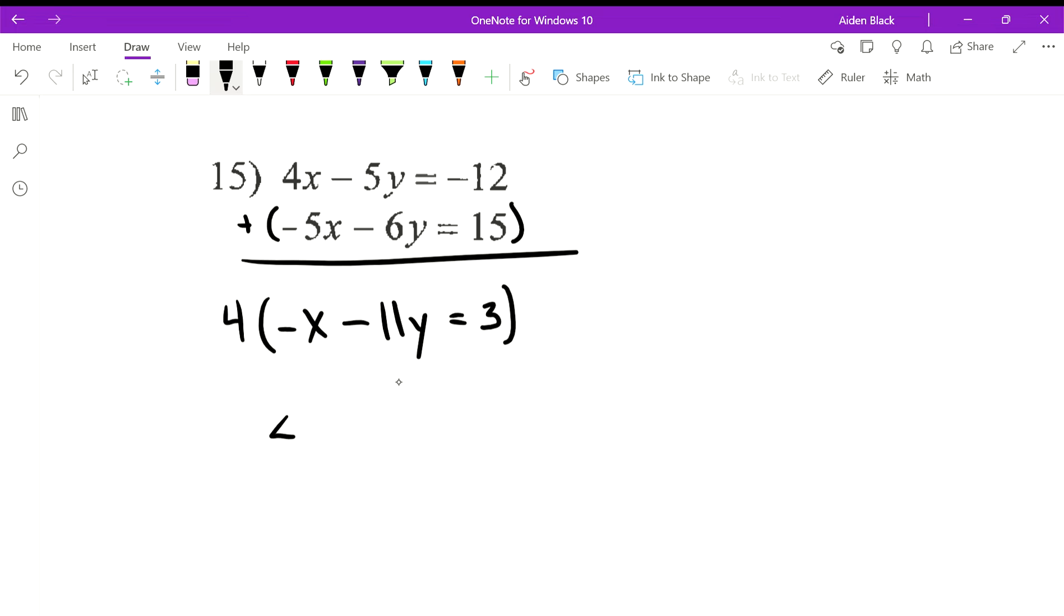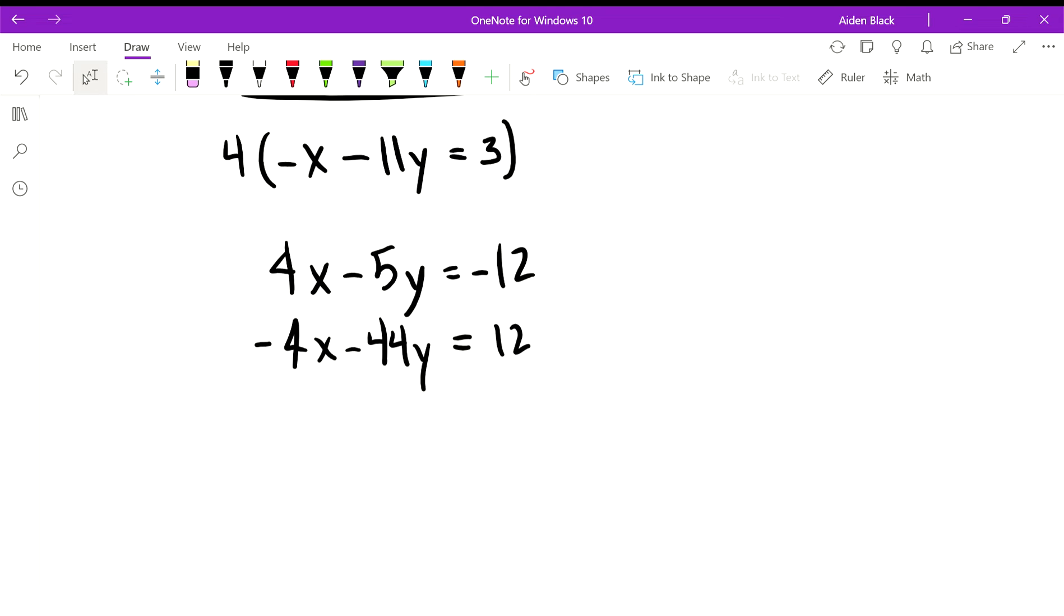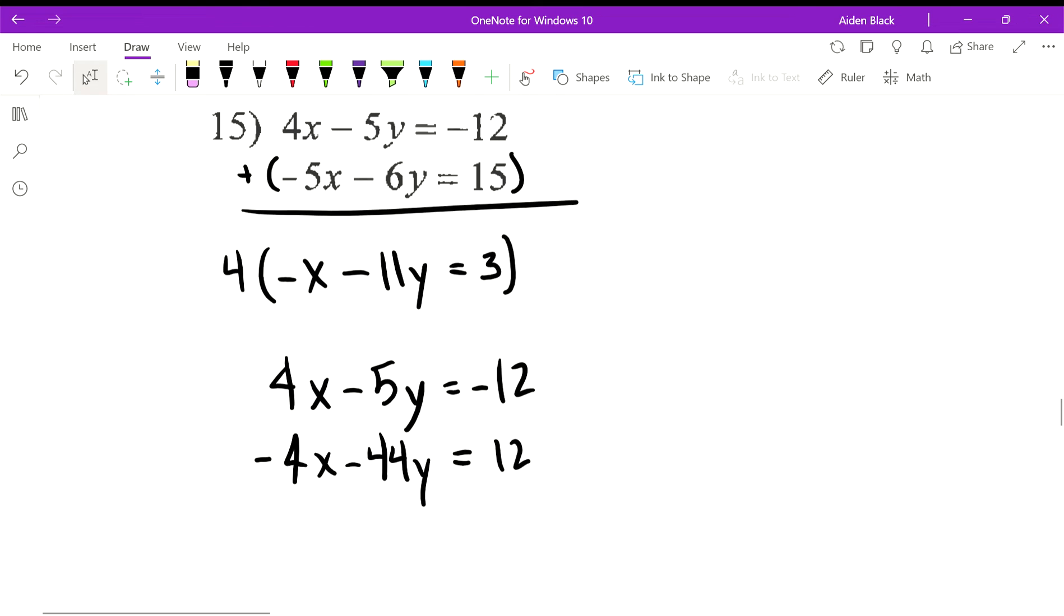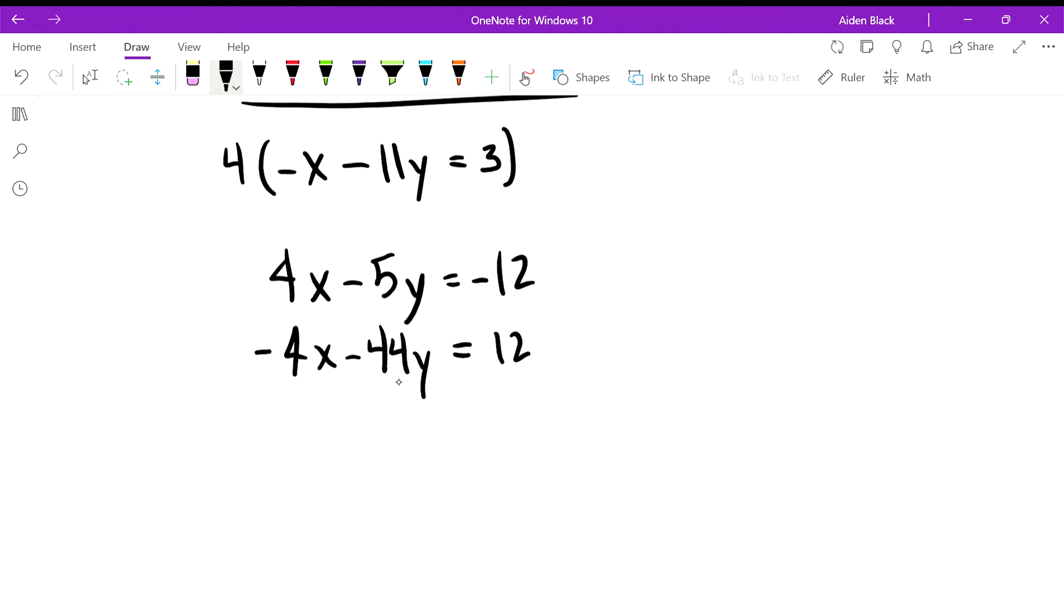So I'm going to rewrite that first equation, 4x minus 5y equals negative 12. And then here I'm going to rewrite this equation after 4 has been distributed to each term. Negative 11y times 4 is negative 44y, and then 3 times 4 is 12. What we end up with is these cancel.